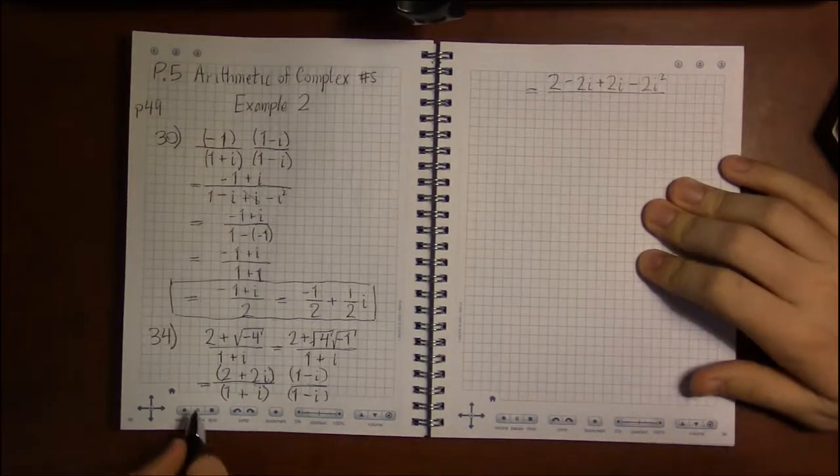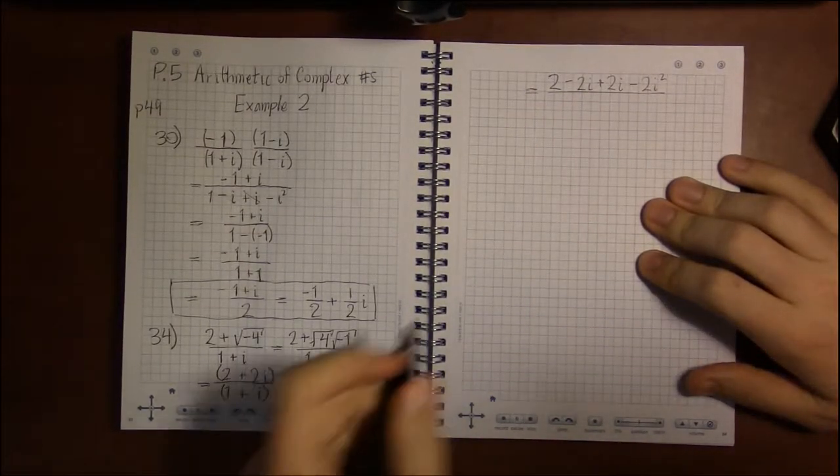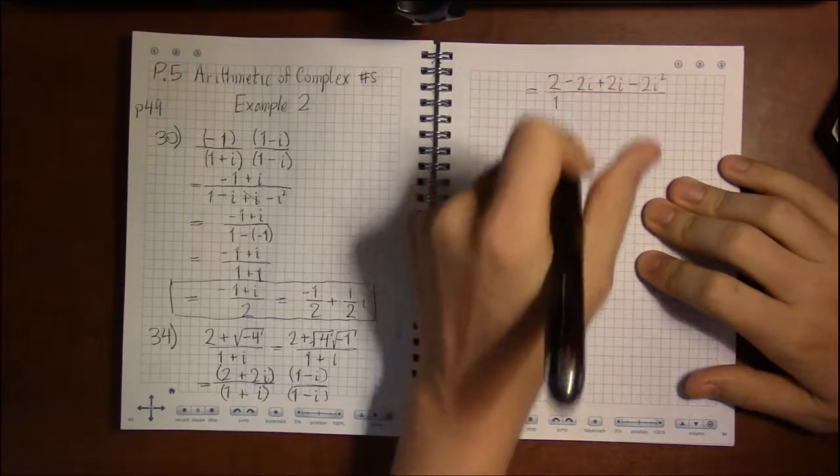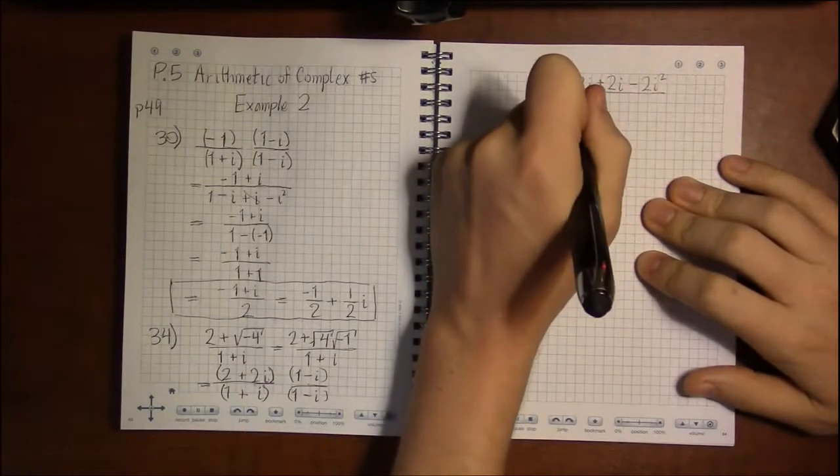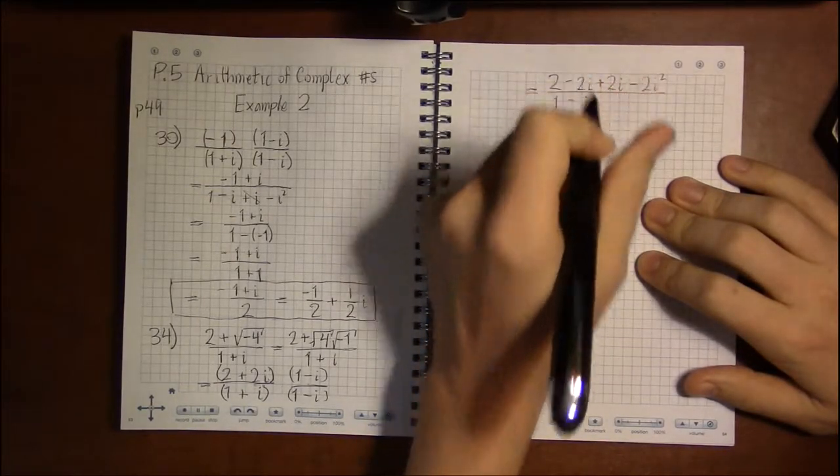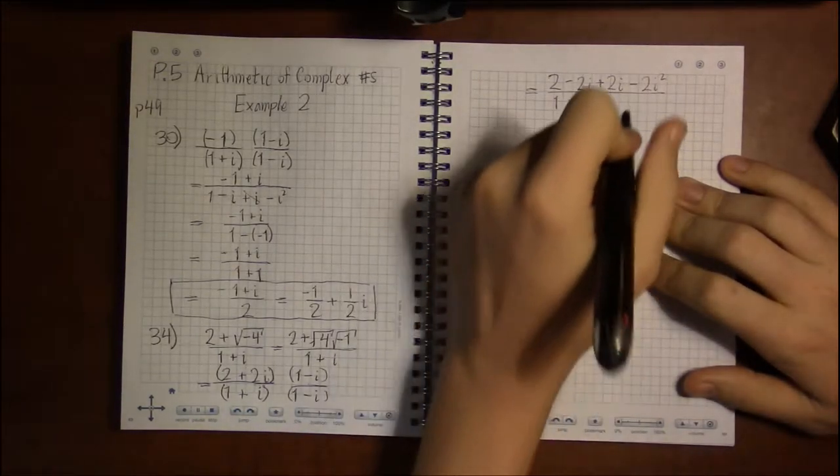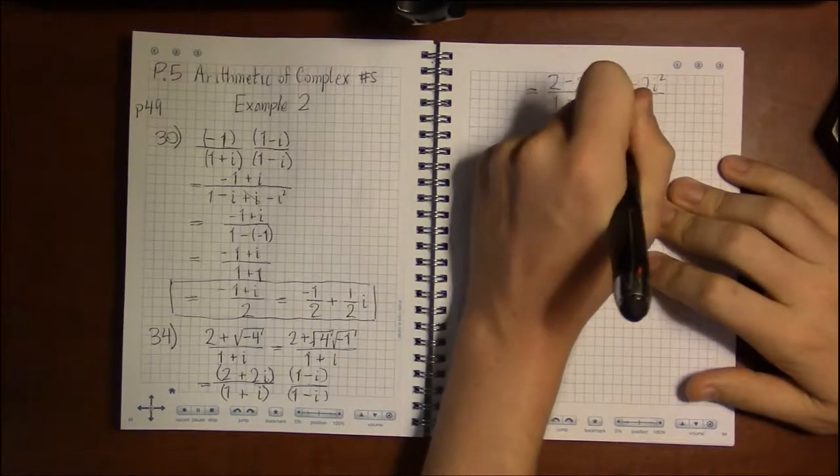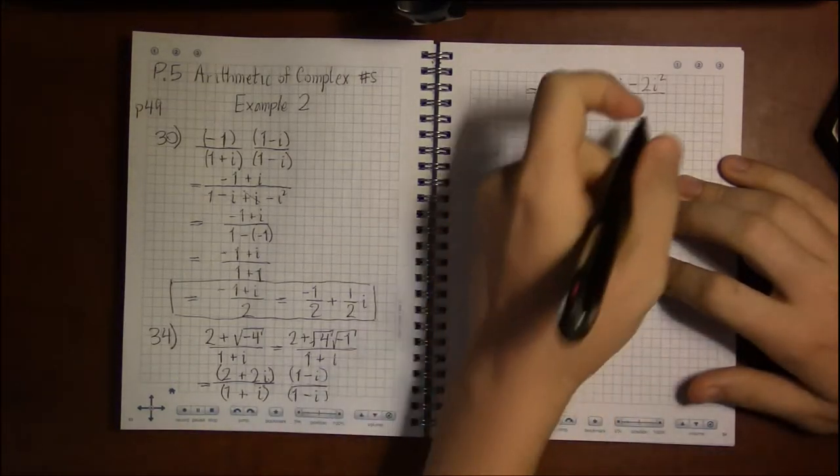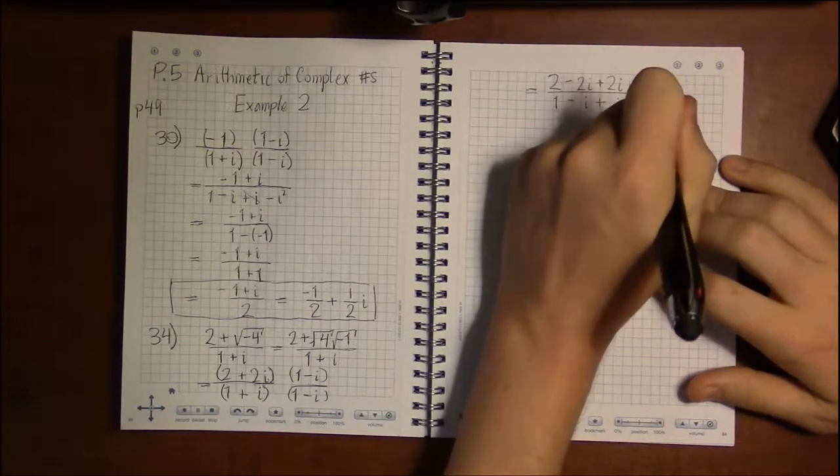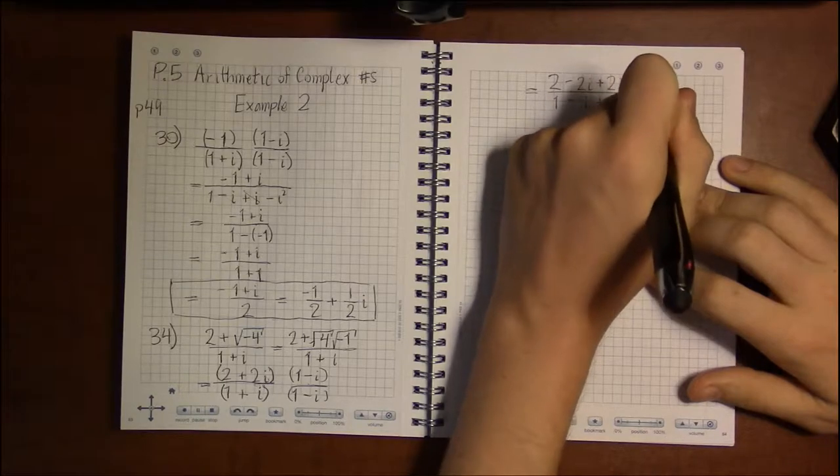And then we're dividing everything by 1 times 1 is 1, 1 times minus i is minus i, i times 1 is i or plus i, and i times minus i is minus i squared.